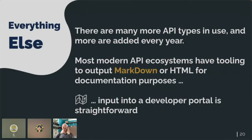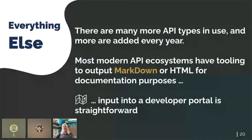Of course there's a lot more in the API landscape that is in use, and more are added every year. The API landscape maybe doesn't move as fast as JavaScript developers move theirs, but it's still in constant flux. The good news is that most modern API ecosystems have tooling to output markdown. So if you can output markdown from the tooling, then input into any developer portal is fairly straightforward these days. It may require a few additional touches to look really nice, but you can have it all side by side regardless of the API's technicalities.